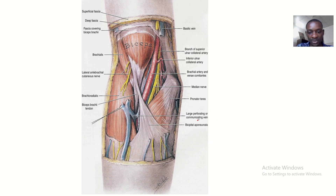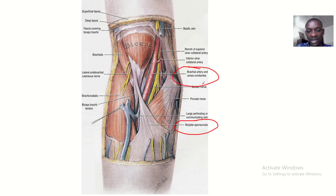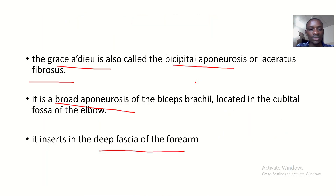Let's look at the bicepital aponeurosis — this is the bicepital aponeurosis. This is the brachial artery. This is the median nerve lying deep to the bicepital aponeurosis. That's it for this lecture; I hope you guys enjoyed it. See you in the next lecture.